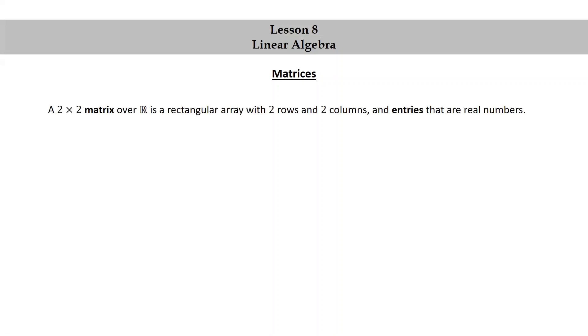Matrices. A 2x2 matrix over R is a rectangular array with two rows and two columns and entries that are real numbers.